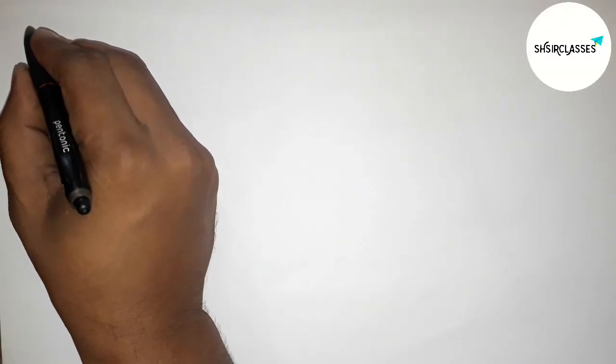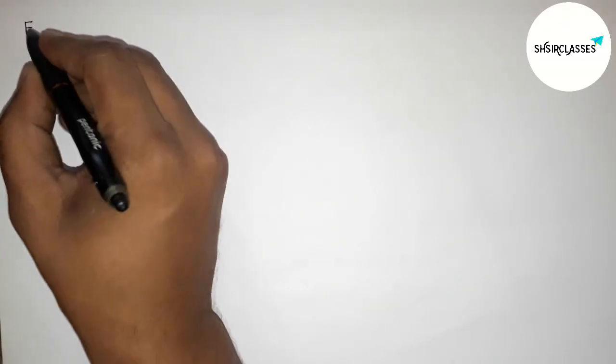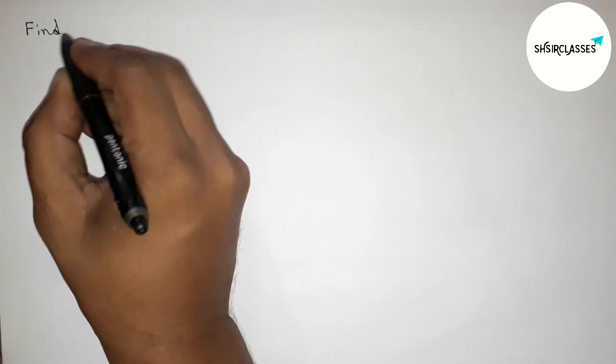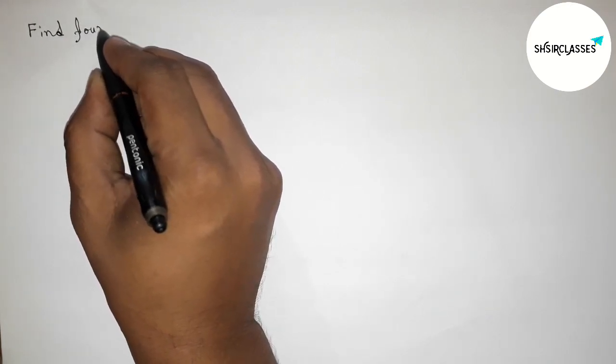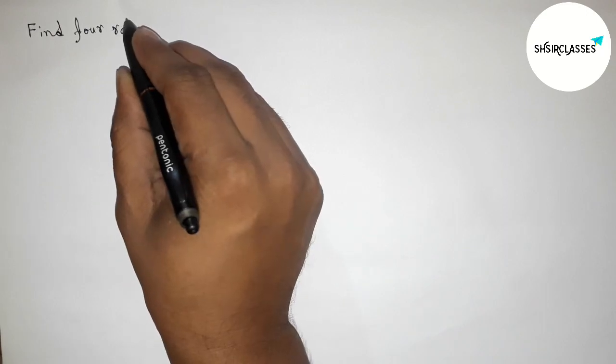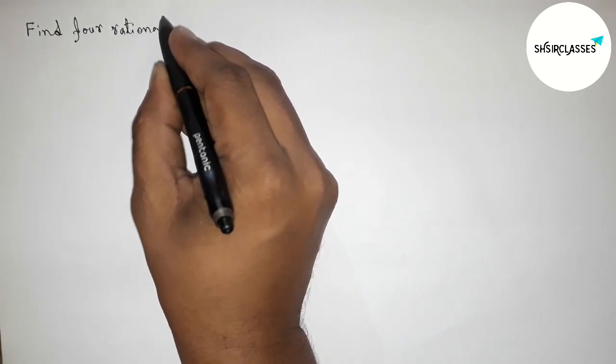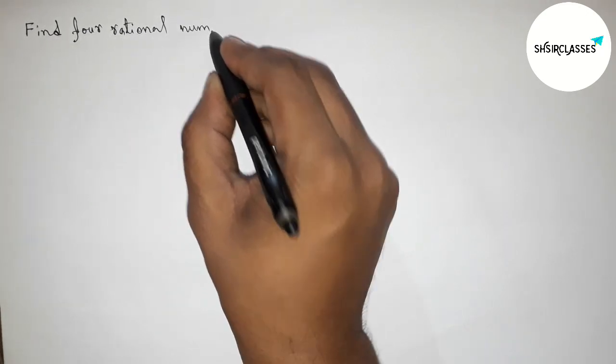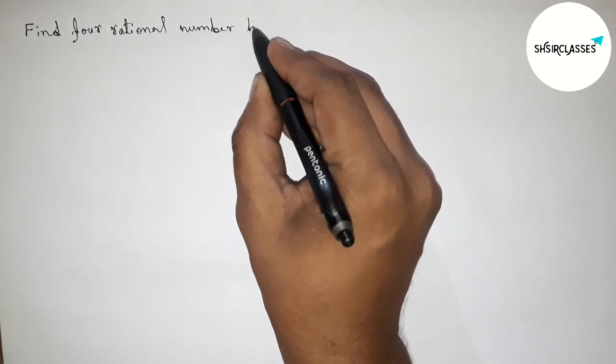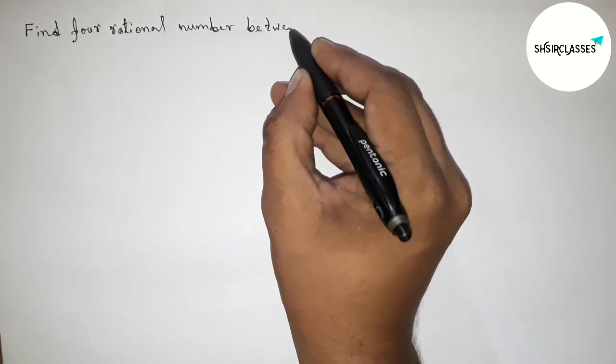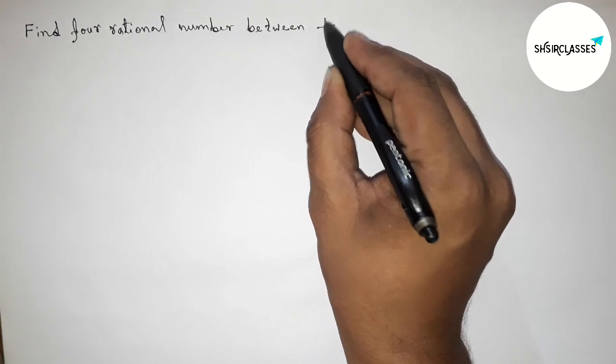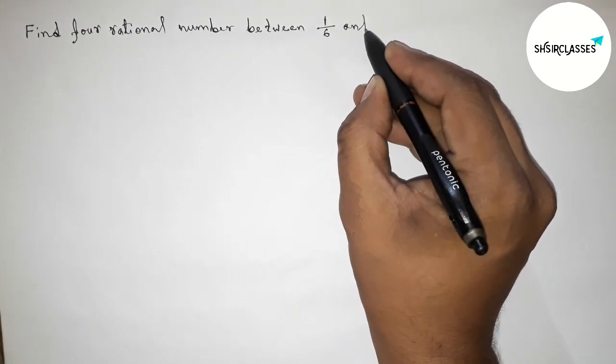Hi everyone, welcome to SI share classes. Today in this video we have to find four rational numbers between 1 by 6 and 1 by 7 in an easy way. So please watch the video till the end. So let's start the video.